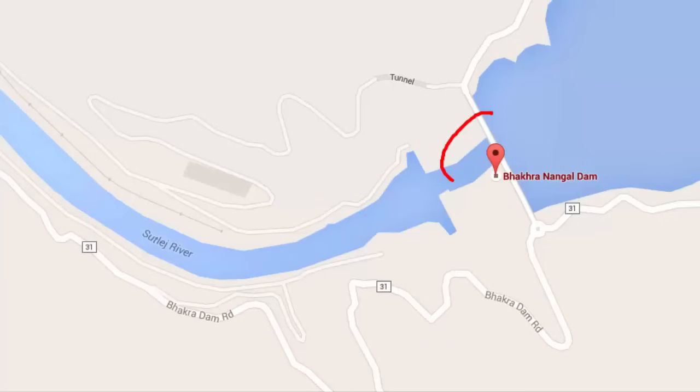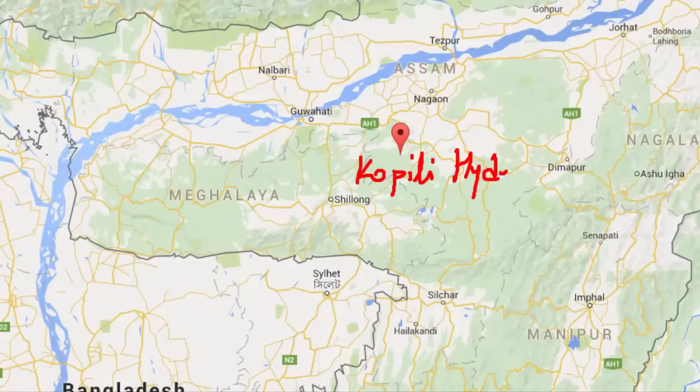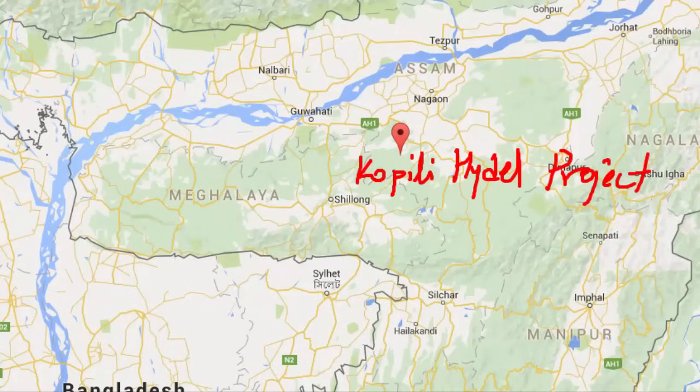And India has a number of multi-purpose projects like the Bhakra Nangal Dam, Damodar Valley Corporation, the Koppili Hydel Project. These places are marked on the map, just have a look at it. And thermal electricity is generated by using coal, petroleum, and natural gas.